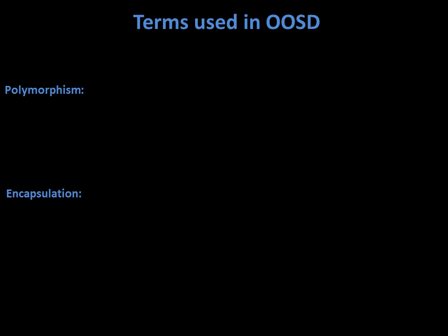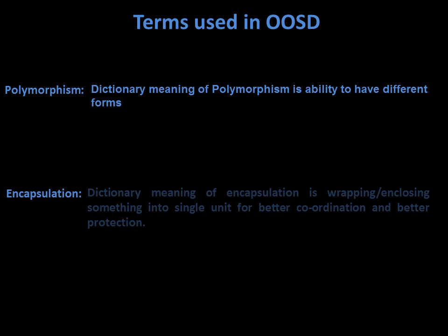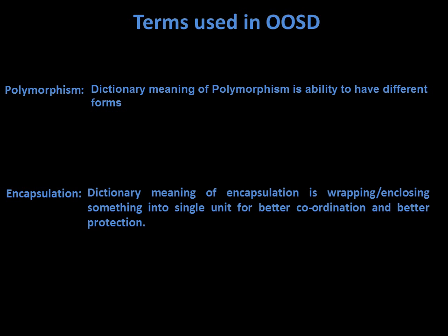For the SISA exam, we need to remember these two terms and their dictionary meanings. Polymorphism: the ability to have different forms. Encapsulation: a technique to wrap and close something into a single unit for better coordination between things and better protection.